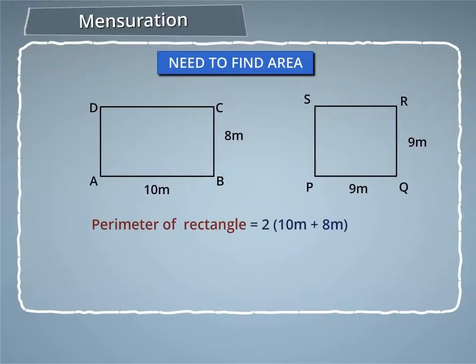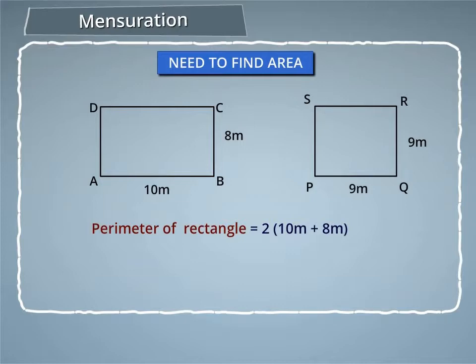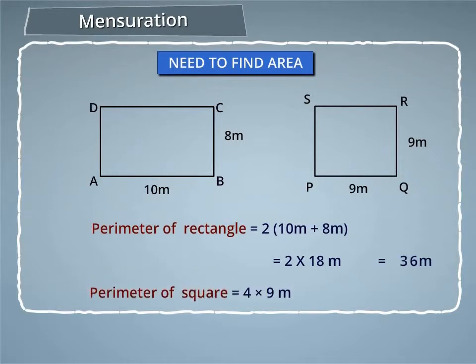Here, the perimeter of the rectangle is equal to 2 into (10 metre plus 8 metre), which equals 2 into 18 metre, which equals 36 metre. And the perimeter of the square is equal to 4 into 9 metre, which equals 36 metre. As we can see, both the figures have the same perimeter.